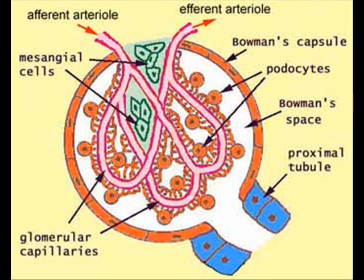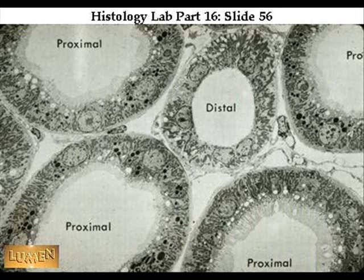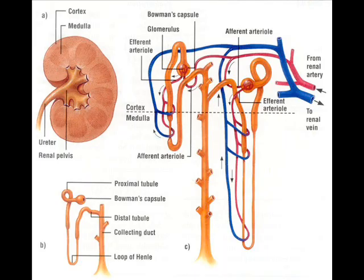The Bowman's capsule is connected to the proximal convoluted tubule, the loop of Henle, the distal convoluted tubule, and the collecting duct. The PCT and DCT are in the cortex and the descending limbs of the loop of Henle are in the medulla. The collecting duct passes through both the cortex and the medulla.